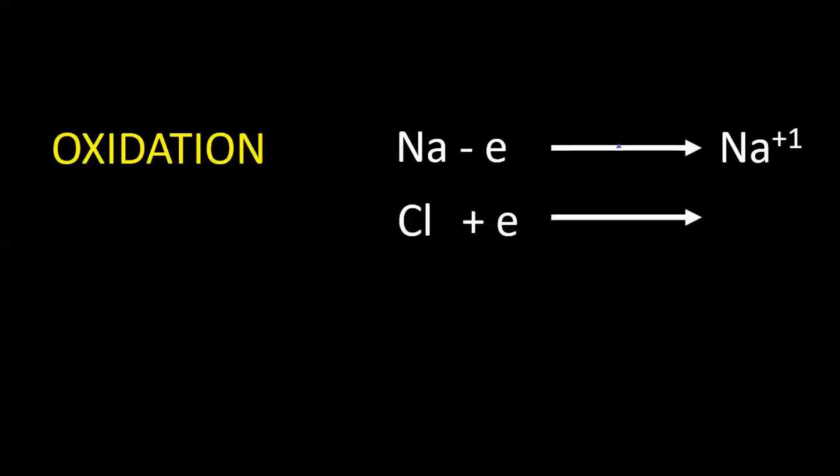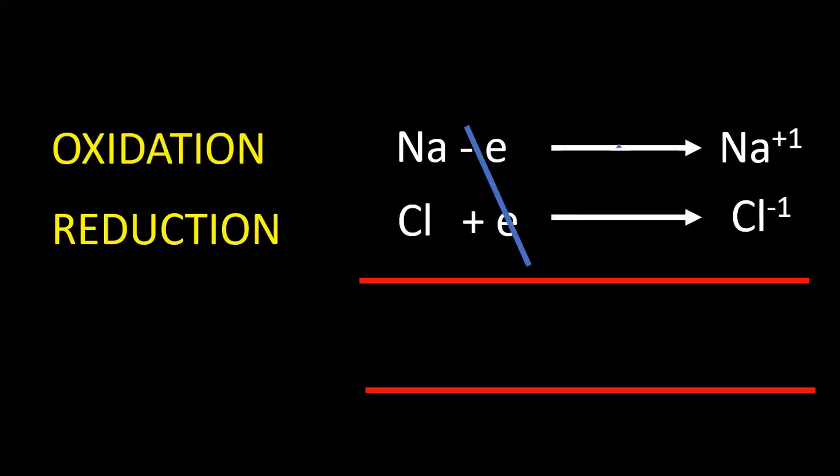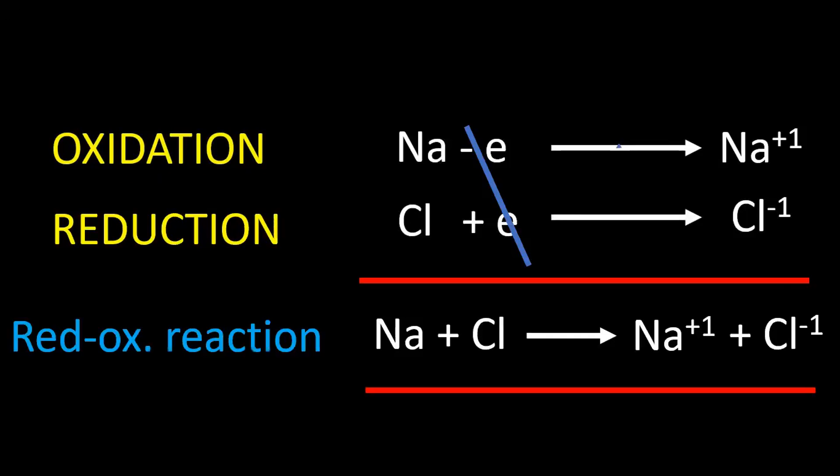Let us take two reactions: oxidation reaction and reduction reaction. Adding the two reactions, the electrons get cancelled. We get this net reaction. This is called a redox reaction.